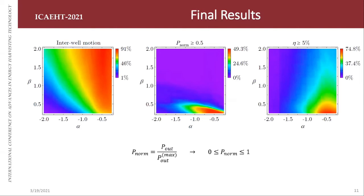So the final results, as you can see here, for the first map we conclude that in this red area here, for a maximum of 91% of the cases, the system shows interwell motion. This interwell motion is associated with a larger bandwidth of the system.